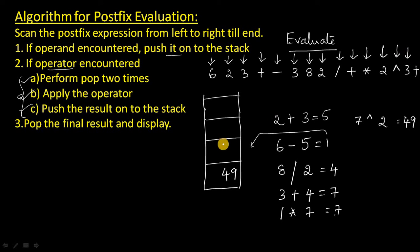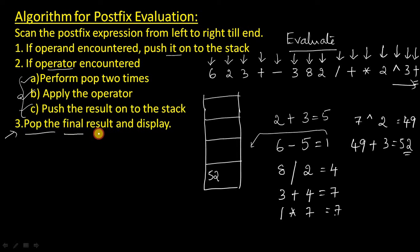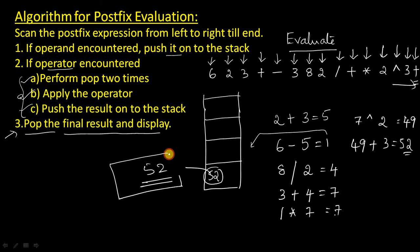And the next one is 3 — 3 is the operand, so add it to the stack. And the last character is plus — that is an operator. So pop this 3 and pop this 49, and apply the operator. The operator is plus, so 49 plus 3 is equal to 52. Add this 52 to the stack. Once you reach the end of the expression, perform the pop operation — 52 will come out of the stack. Display this 52 as the final result.